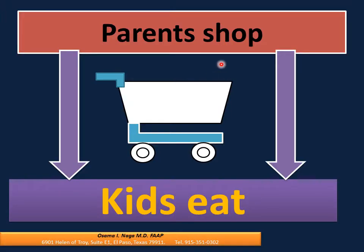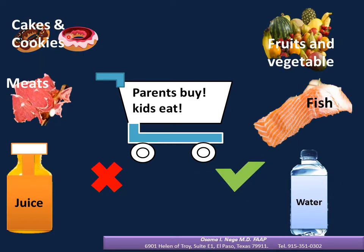Parents shop, kids eat. Instead of buying cakes and cookies, buy fruits and vegetables. Instead of buying red meats, buy fish and white meat. Instead of buying juices, buy water. Parents buy, kids eat.